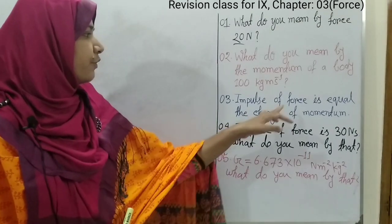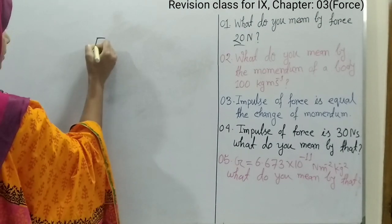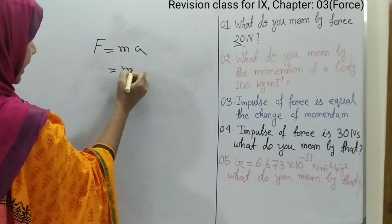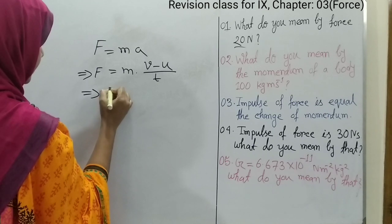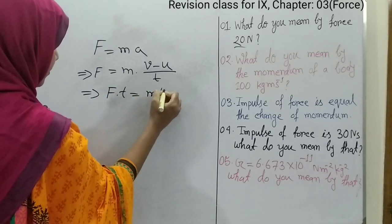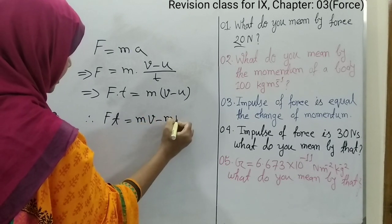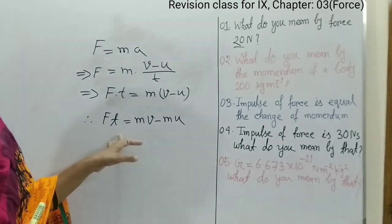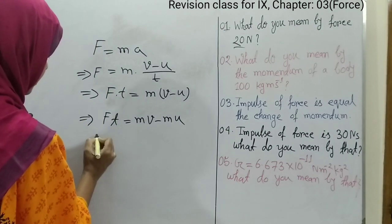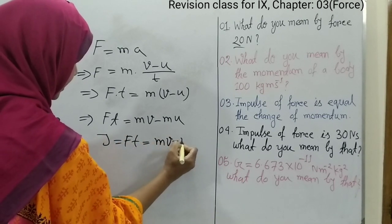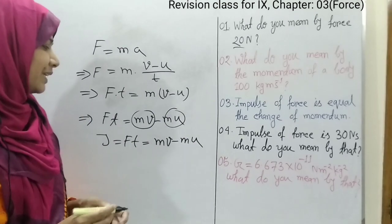Third question: impulse of force is equal to the change of momentum. From Newton's second law, F equals MA, and A means V minus U divided by T. So we can write that F·T equals MV minus MU. The product of force and time is called impulse of force, denoted by J. So J equals FT, that is MV minus MU, where MV is the final momentum and MU is the initial momentum.